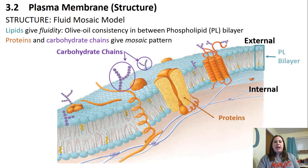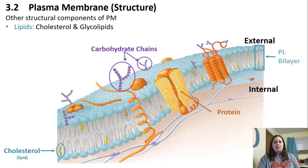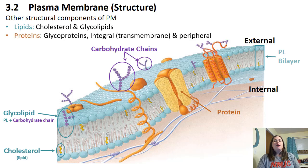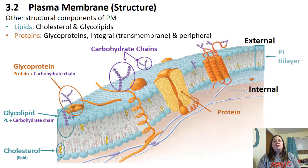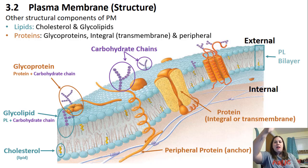Besides phospholipids, cholesterol is also present — the honeycomb-shaped structures embedded in the plasma membrane. Glycolipids are when a carbohydrate is attached to a phospholipid. There are also glycoproteins, where a protein has a carbohydrate chain attached. Integral transmembrane proteins go all the way across the membrane — transmembrane means all the way across. Peripheral proteins are only on one side, either inside or outside, and do not cross the membrane. Cytoskeleton fibers inside the cell act as anchors for many transmembrane proteins.